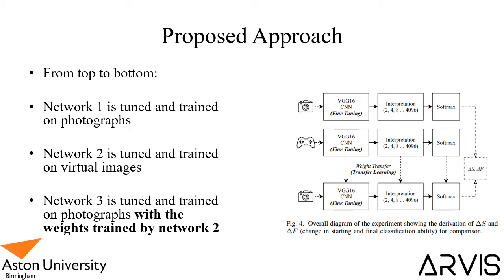Here is a diagram of our proposed approach. From top to bottom we see three neural networks. The first network is tuned and trained on photographs — images go into the VGG-16 CNN and we fine-tune an interpretation layer of 248 to 4096 neurons. Network two trains on virtual images gathered from the Unity game engine performing the same task. Network three tackles the same problem as network one — classifying real-world photographs — but before training we transfer the weights from the trained video game network. We then compare networks one and three to see whether learning from virtual environments affects classifying real-world environments.